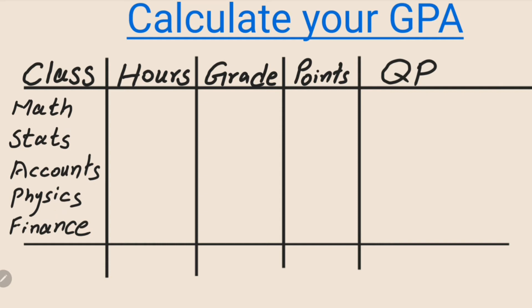For each subject you have certain credit hours. For example, for Math we have three credit hours, then for Stats we have three, for Accounts one, for Physics four credit hours, and for Finance two credit hours.